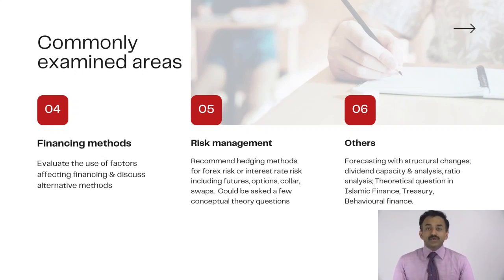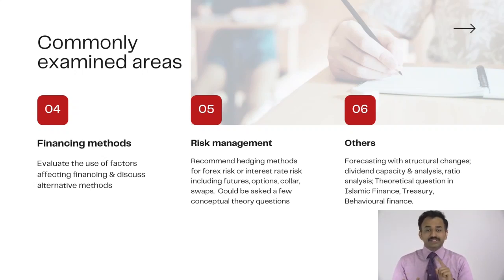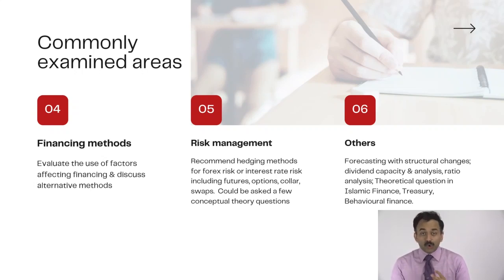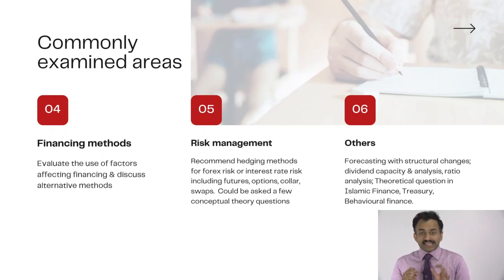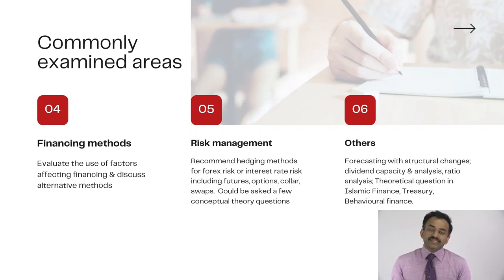Risk management is a guaranteed question in the exam. You're bound to have a question primarily focusing on either interest rate risk or foreign exchange risk along with related discussion elements. This may take the form of hedging using FRAs, futures, options, collars, or swaps for interest rate risk, or forwards, futures, options — both OTC and market-traded — as well as money market hedges for foreign exchange risk. Often you're asked to hedge using only select methods and then discuss your calculations alongside other hedges already completed by the examiner.